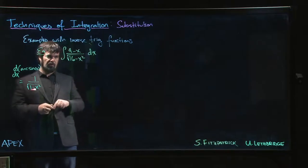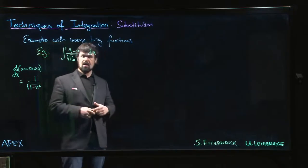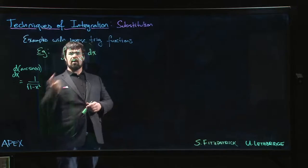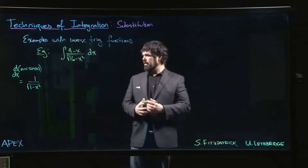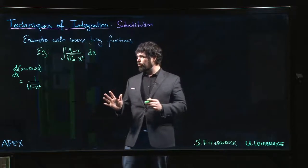But we know that we can handle that with substitution, similar to the example we did with arctan. But we have this 4 minus x on top, so how do you handle that?